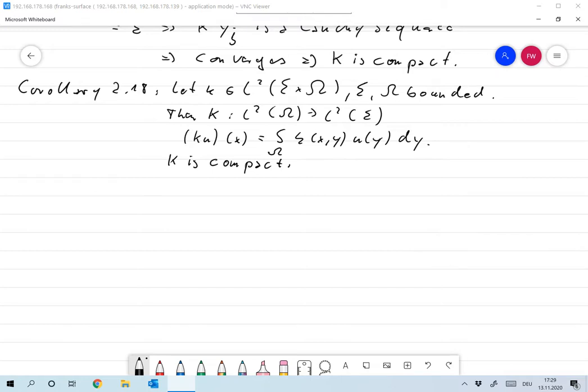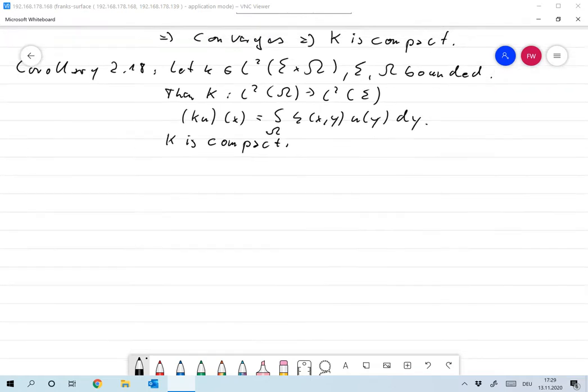Okay, we start by - I leave the proof to you. Actually, the proof is more or less on sheet three, exercise two. And what you're showing there is, if small k is continuous, then the operator capital K is compact.